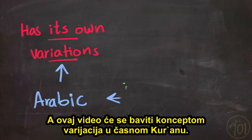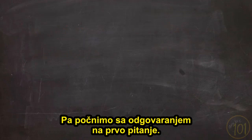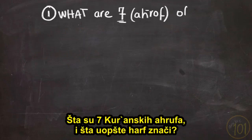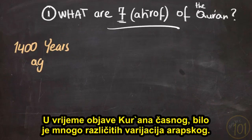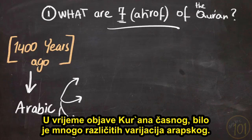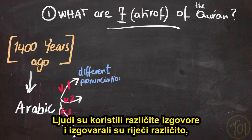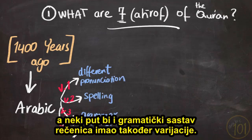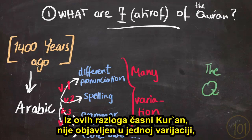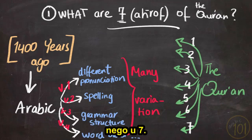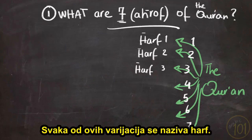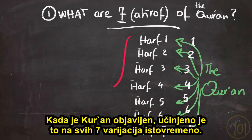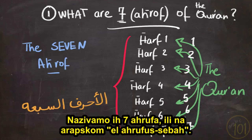This video will tackle the concept of variations in the Holy Quran. Let's get started by answering the first question: what are the seven ahroof of the Quran, and what does 'harf' even mean? At the time of the revelation of the Holy Quran, there were many different variations of the Arabic language. People used different pronunciations, spelled words differently, and sometimes the grammatical structure of sentences had variations too. For this reason, the Holy Quran was not revealed in one variation but in seven. Each of these variations is called a harf, and we call them the seven ahroof — in Arabic, al-ahroof as-sab'a.